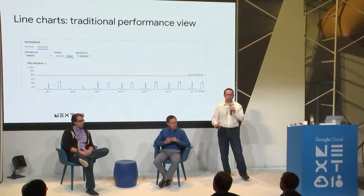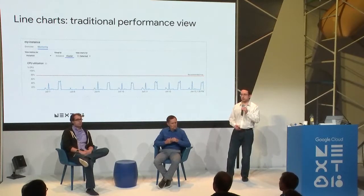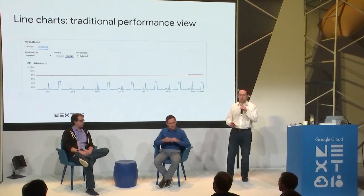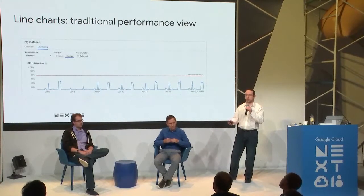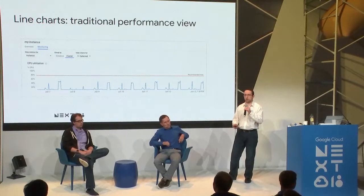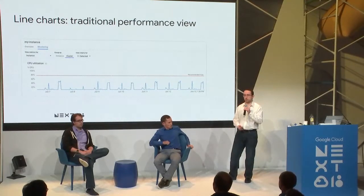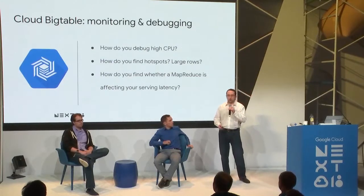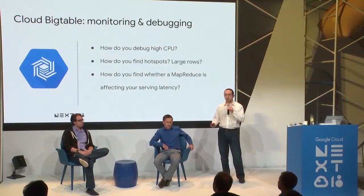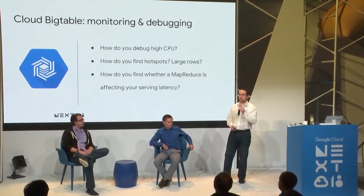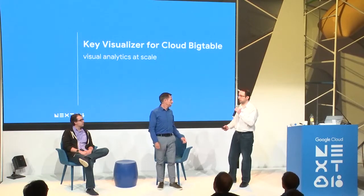Traditional monitoring uses line charts showing CPU utilization, latency, and data stored. This can show average CPU utilization or CPU for the hottest node, hinting at possible hot spots. But what if you want to know more — what's actually happening under the covers? How can you improve your row key schema design? How would you know if you have large rows, or if a MapReduce is affecting serving latency, or debug the root cause of high CPU? That leads us to Key Visualizer.